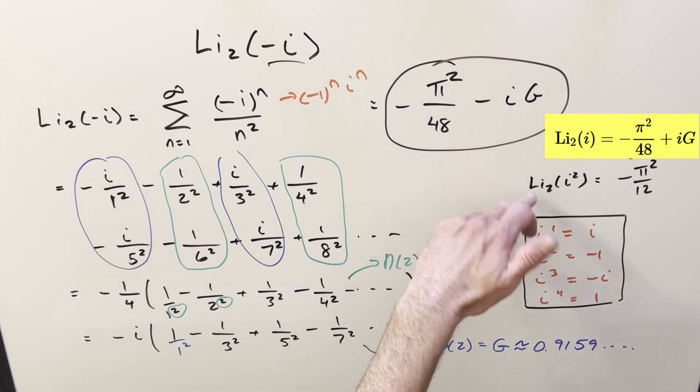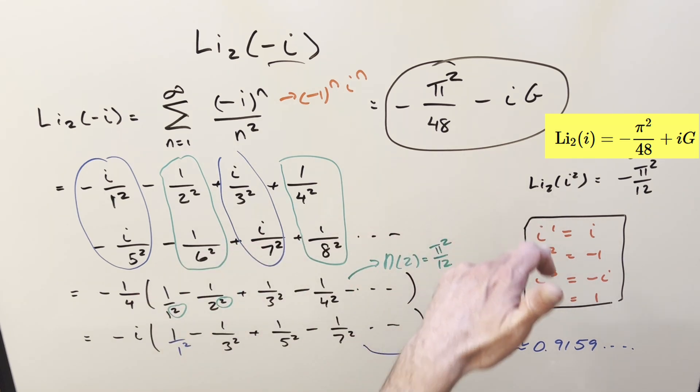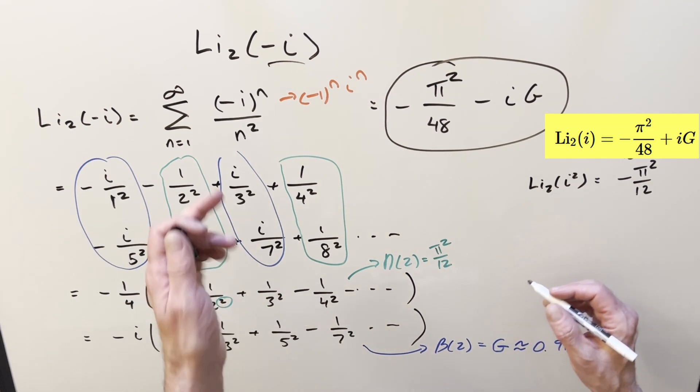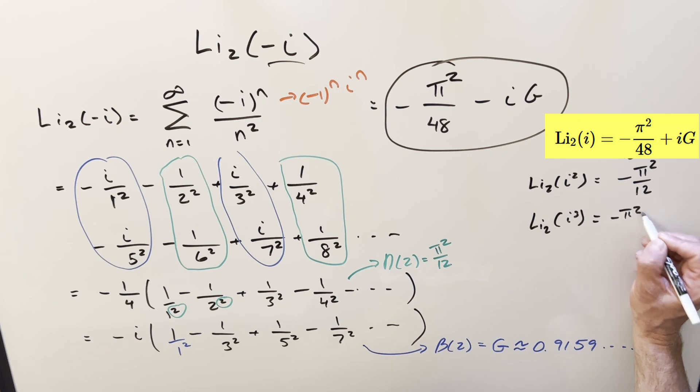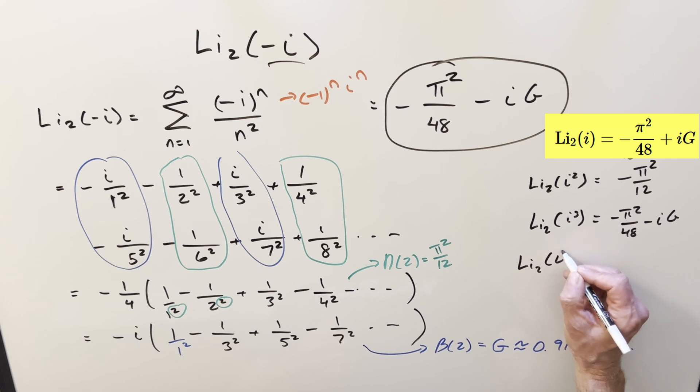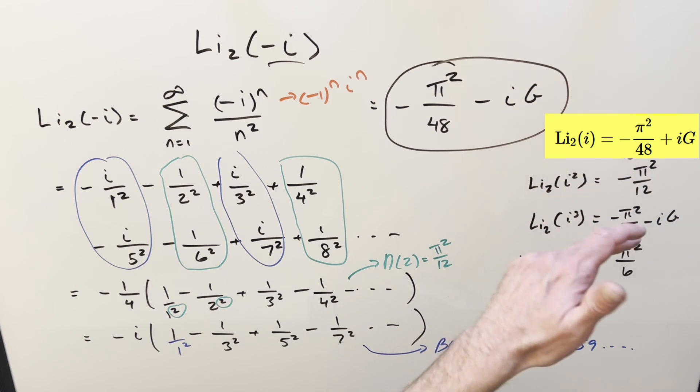I derived both these values in previous videos. I'll provide a link to the dilogarithm playlist where you can get some of these other values. I'm going to add some more values too, but I think I did all the easy real values. So now, like we just said, for dilogarithm of i cubed, that's the same thing as minus i. So this is what we just found, minus pi squared over 48 minus iG. And then last, dilogarithm of i to the fourth, i to the fourth is just 1. And the dilogarithm of 1 is actually just pi squared over 6. And so if you keep going, you want dilogarithm of i to the fifth, you're back to this value, and it's just going to repeat.